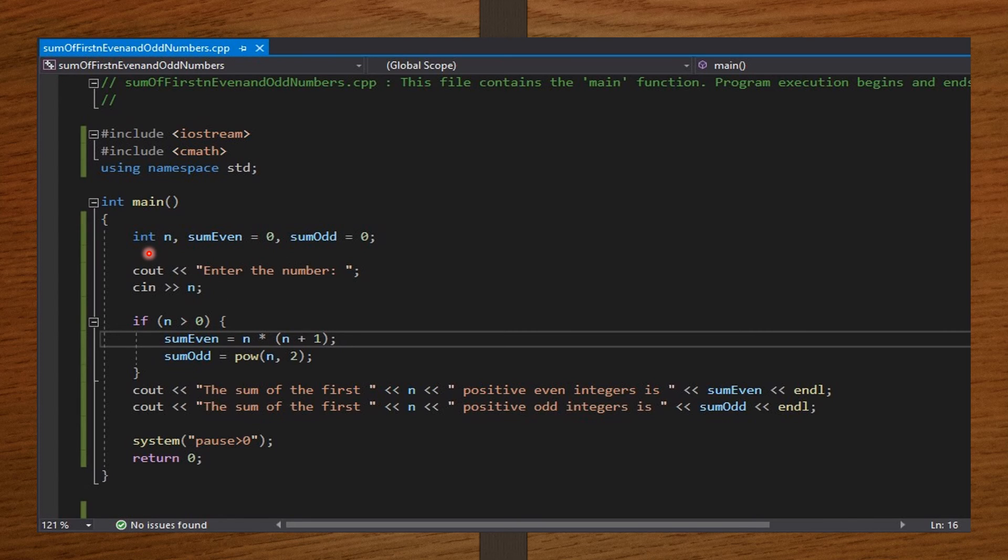Then I take the integer value for n from the user. Then I set the if condition that is going to check if the user's number is actually a positive integer and then compute for sumEven and sumOdd using the formulas we've already explained. Then I print out my results and then I end my code with system pause to ensure that only the information we need will be displayed, and then return zero.